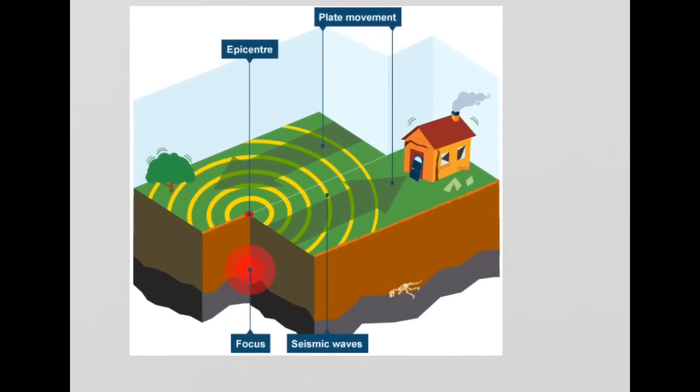In this diagram here, this piece of crust or this plate is moving in that direction. This piece of crust is moving in that direction, caused by convection currents. There is a lot of friction on the plate boundary or the area where the two plates meet.